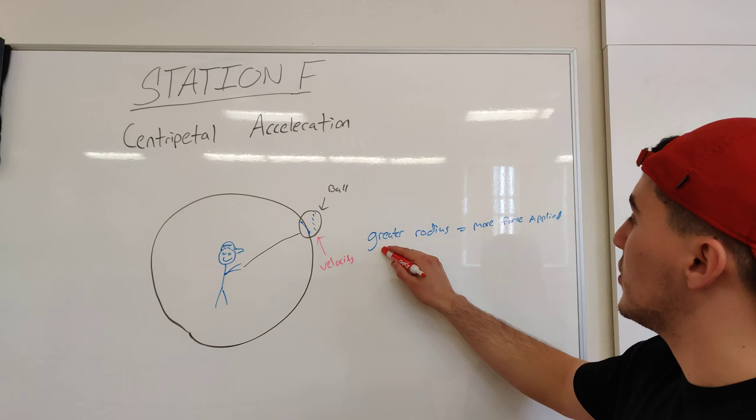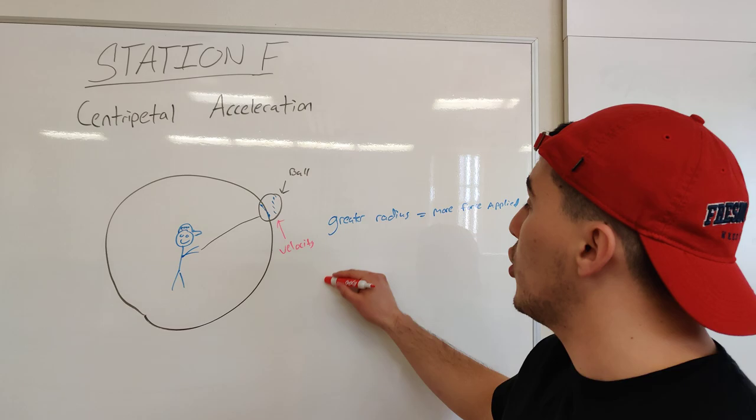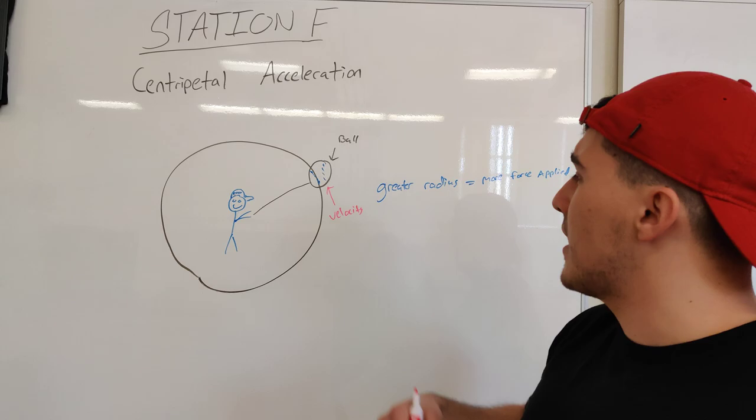So we know that if there's a greater radius, he will therefore have to apply more force to spin the ball angularly compared to a lower radius or a smaller radius. He will then have to apply less force to keep it kind of the same acceleration as he would if it was further away.